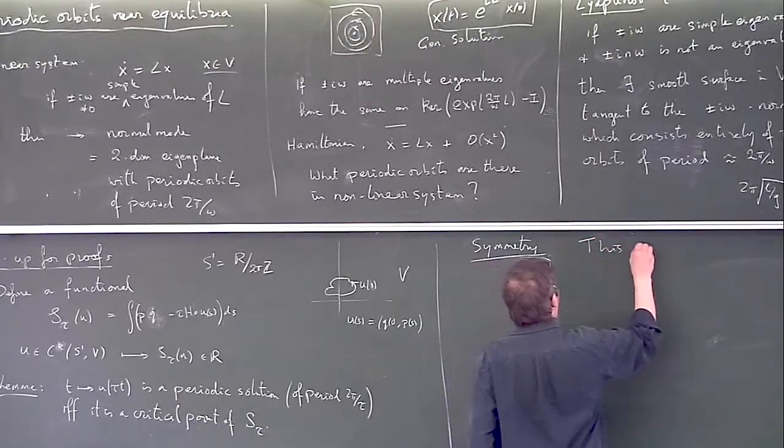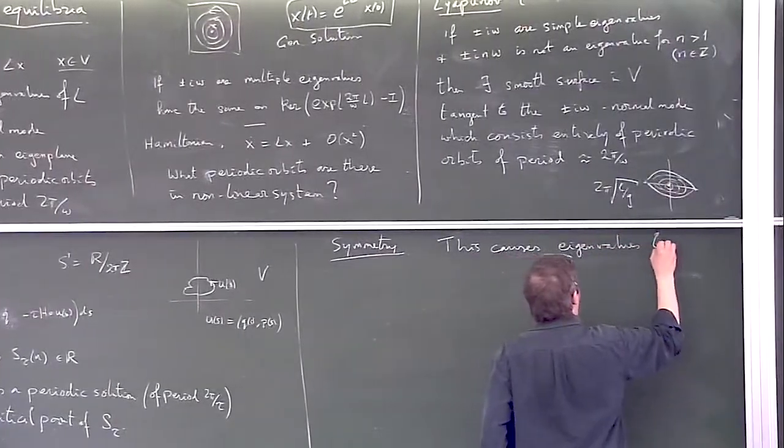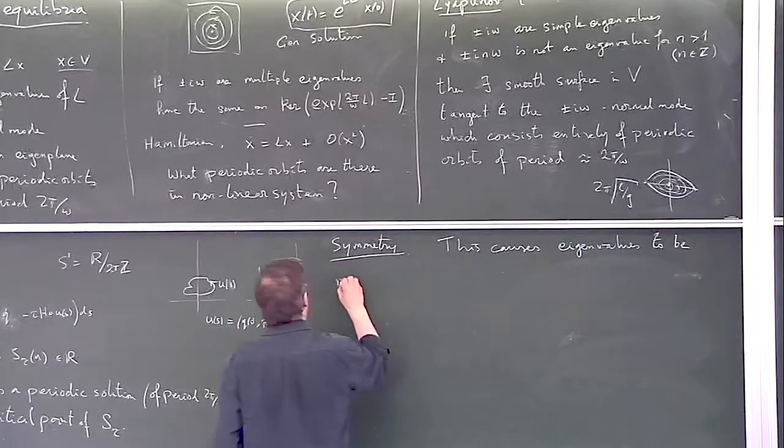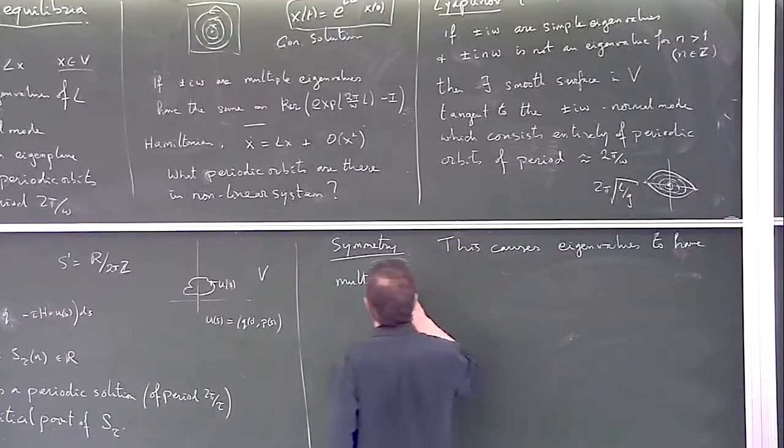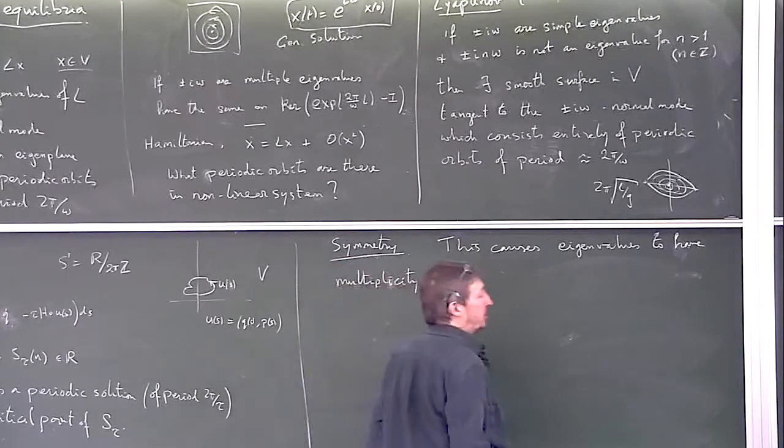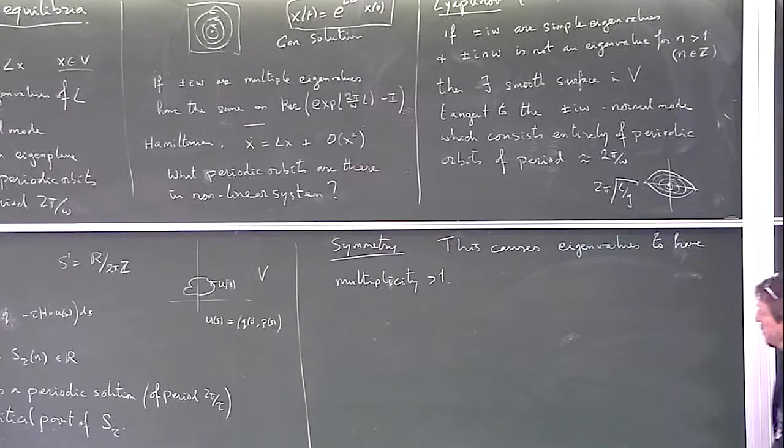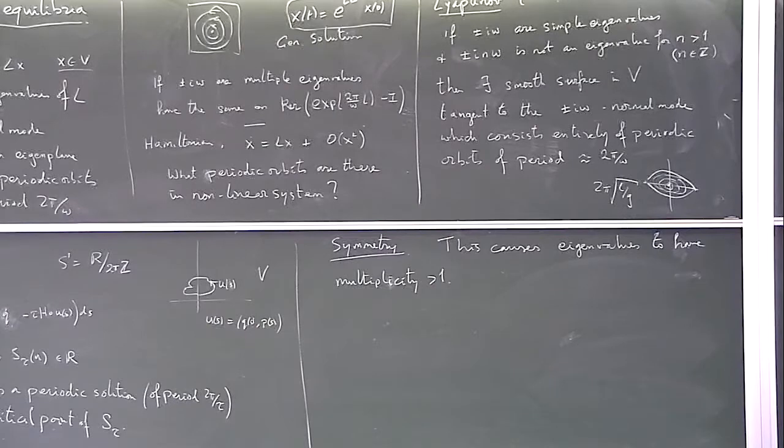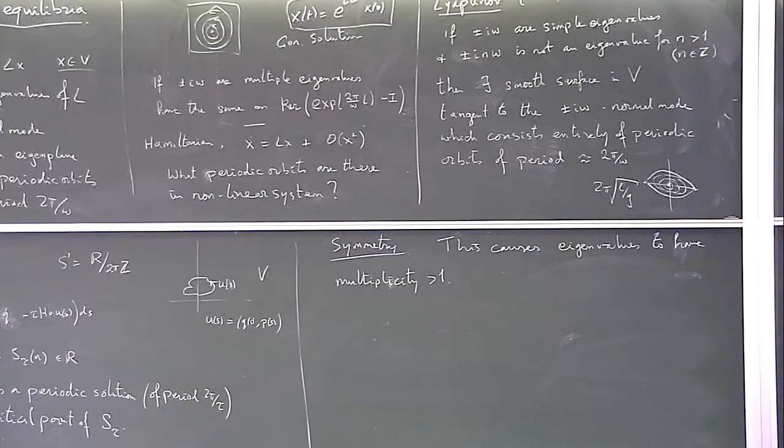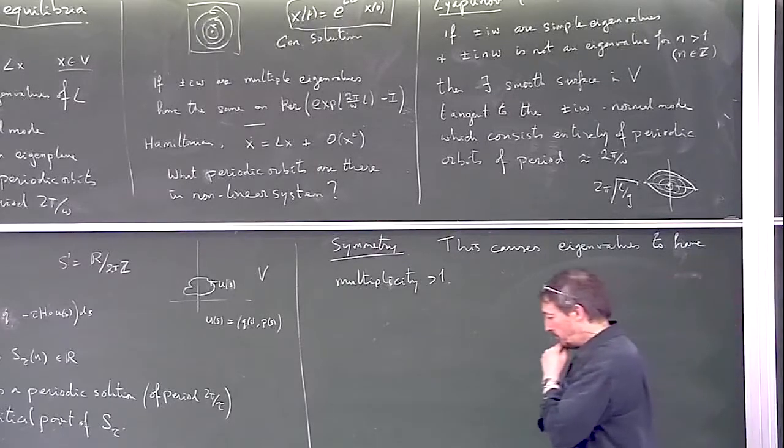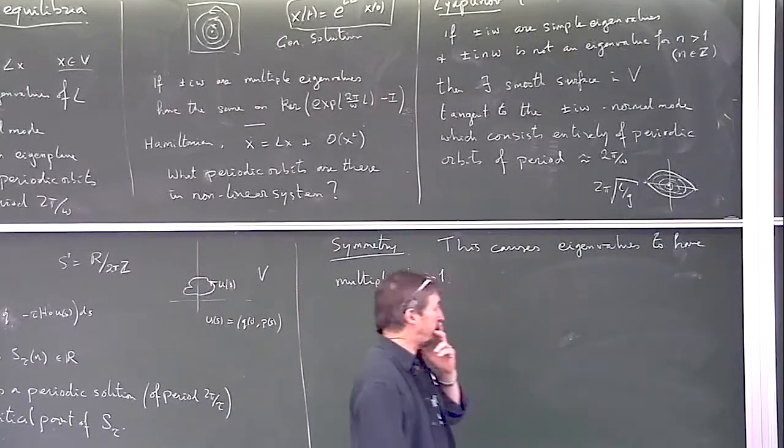This causes eigenvalues to be multiple, to have multiplicity greater than 1, except for the very simplest cases of a group of order 2. But as soon as you have anything like dihedral group or cyclic groups or things, then the multiplicity is always going to be bigger than 1. So one would never be able to apply Lyapunov's theorem. One can apply Weinstein's theorem, but it doesn't tell us a lot.